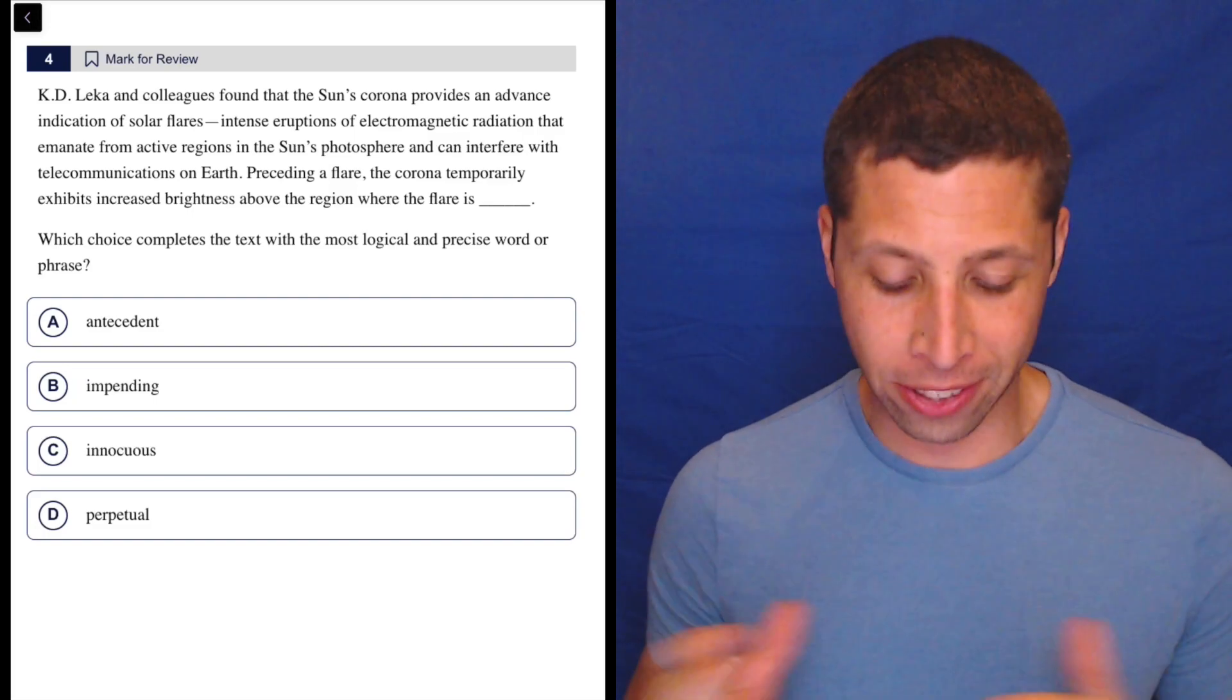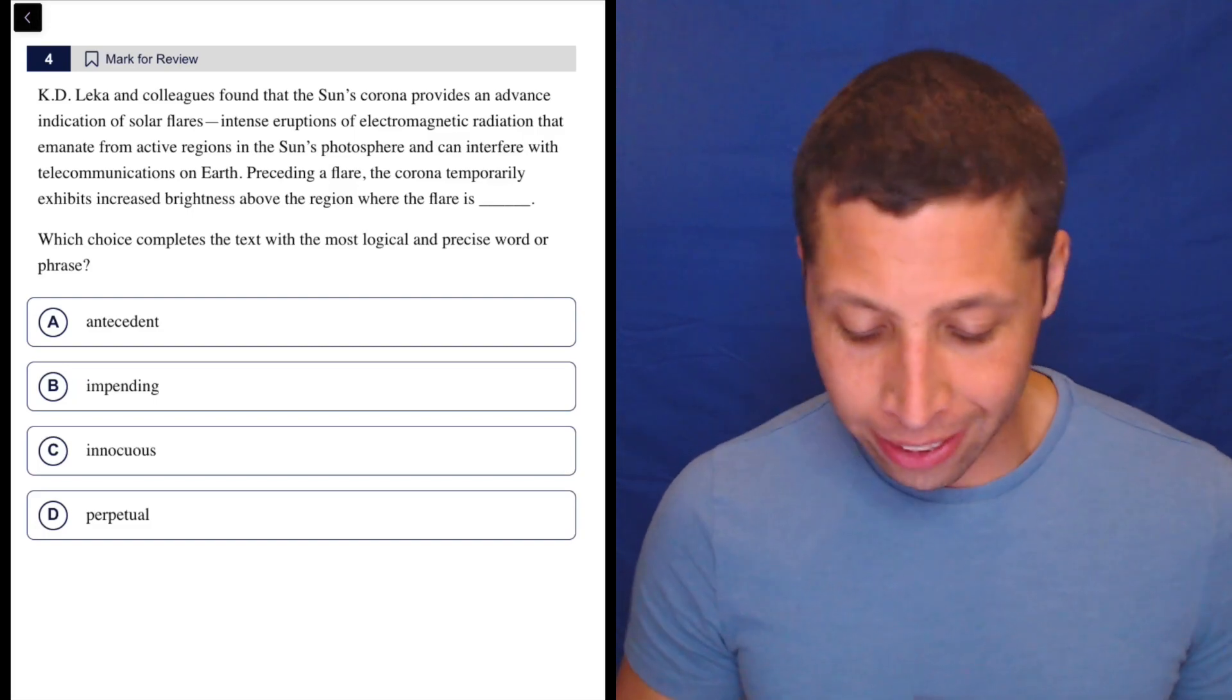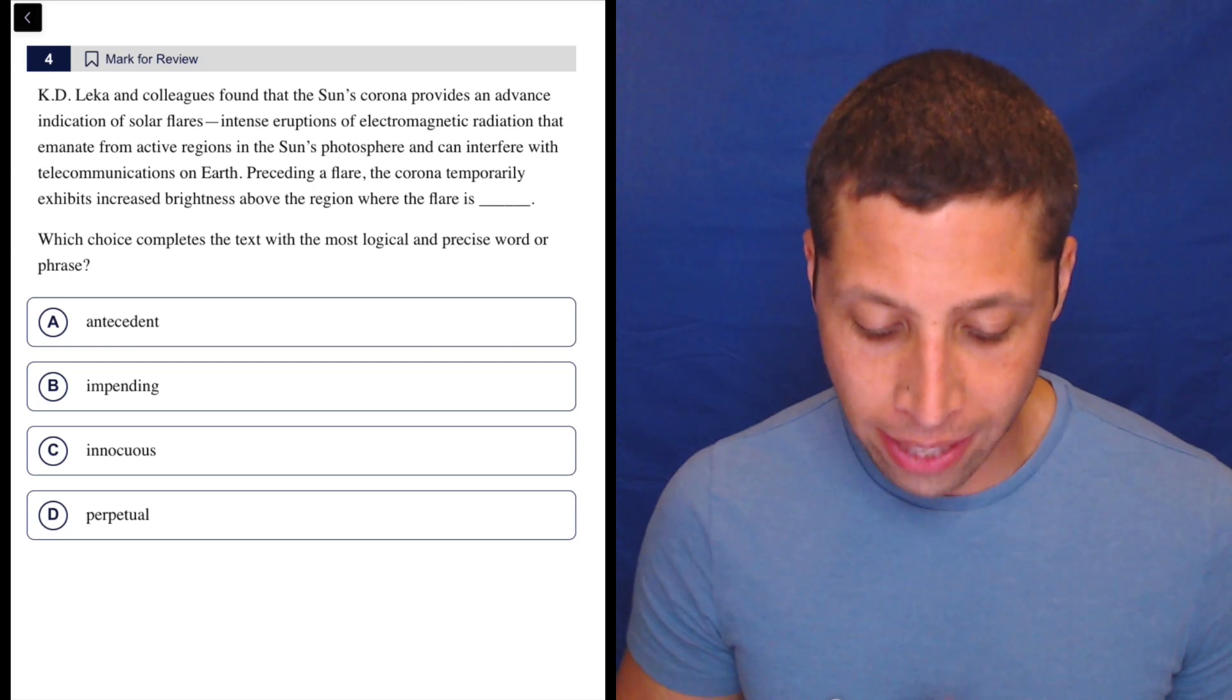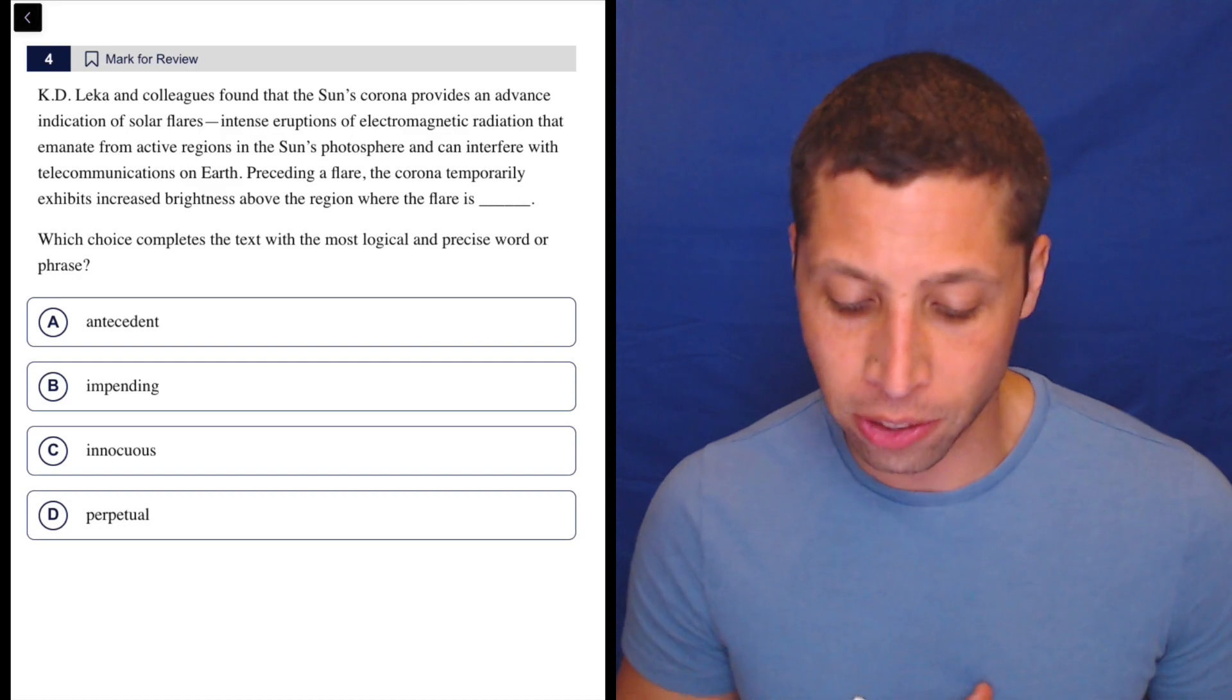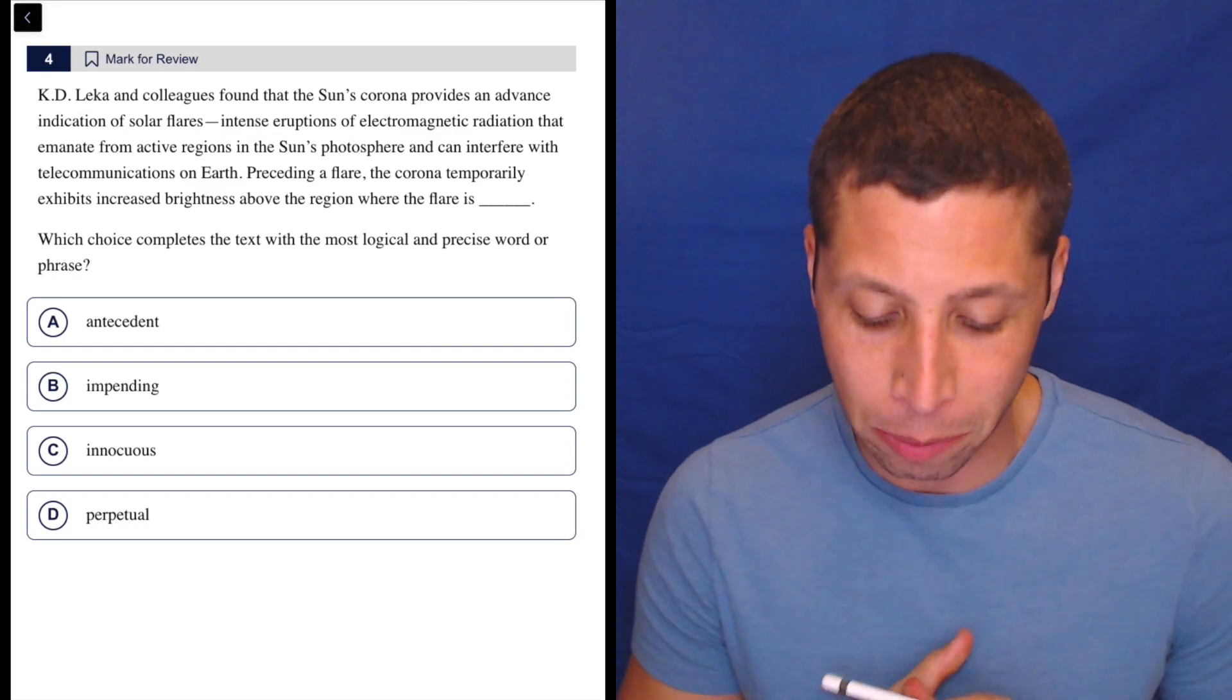I think this is kind of a hard question. So let's take a look. K.D. Lekka and colleagues found that the sun's corona provides an advanced indication of solar flares, intense eruptions of electromagnetic radiation that emanate from active regions in the sun's photosphere and can interfere with telecommunications on Earth.